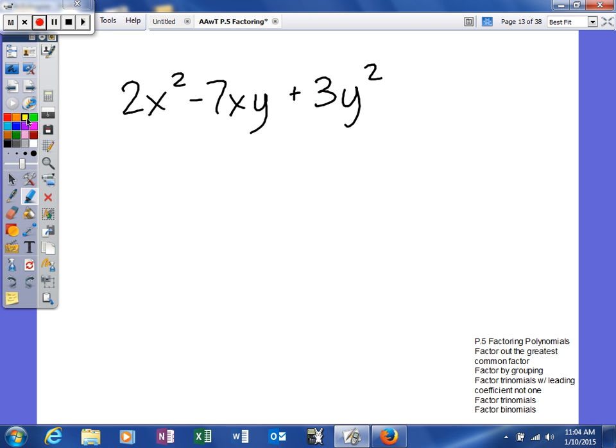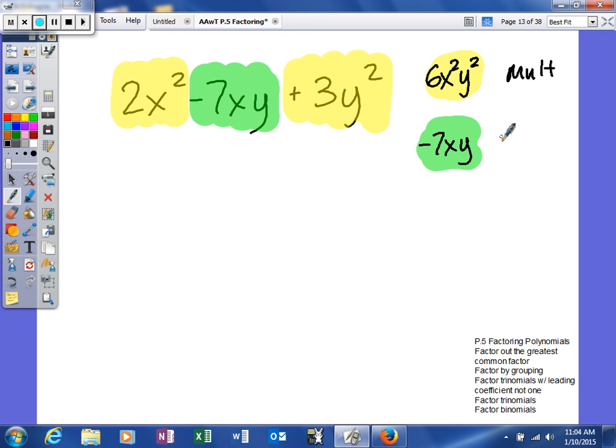The process of getting this trinomial to be a 4-term polynomial is to multiply this times this, and I'll put the product over there. And then we want them to add to give me this. So let's see if we can't come up with our numbers. This will give me 6x squared y squared. I'm going to think what two numbers will multiply to give me that. And they have to add to give me negative 7xy. And we're looking for sum or difference.